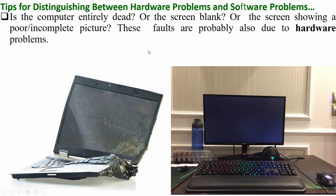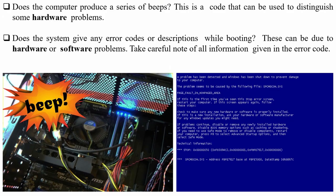If the computer has completely died, the screen is blank, or displaying a poor incomplete picture, these faults are probably due to a hardware problem. The motherboard or screen may be damaged. If the computer is on but the screen shows nothing, the problem may be from the memory, graphic card, or the cable connecting the CPU to the monitor. If the computer produces a series of beeps, this is a code that can distinguish hardware problems — for example, a missing RAM will prevent the computer from starting.